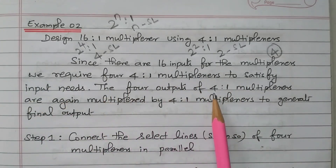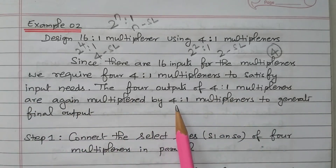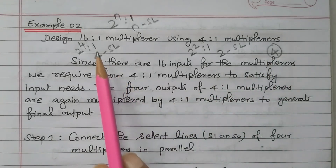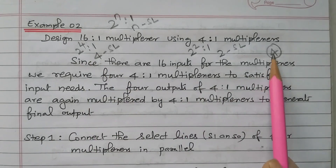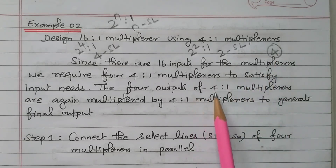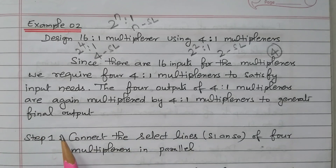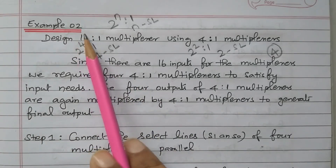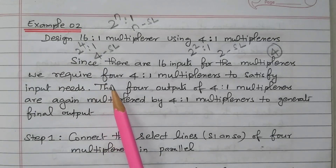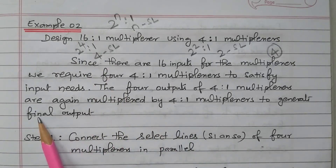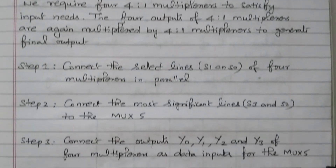The 4 outputs of the 4-to-1 multiplexers are again multiplexed by one more 4-to-1 multiplexer to generate the final output. We are using 4 multiplexers to connect the 16 inputs, giving 4 outputs. Since we need only one output, the outputs of these 4 multiplexers are connected to another multiplexer. So we have totally 5 multiplexers needed.